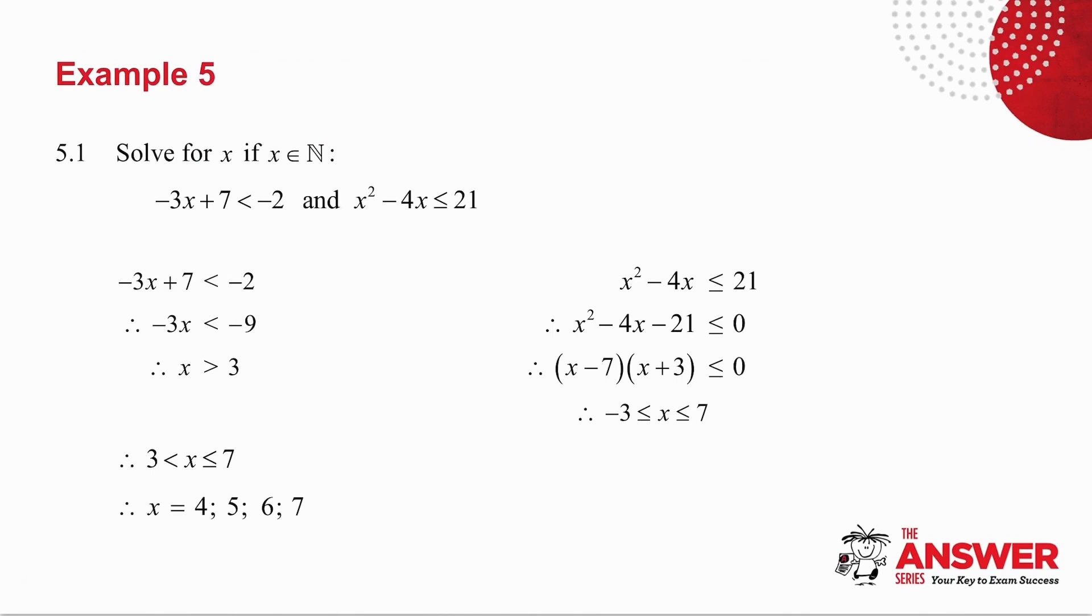The first example has two inequalities. Notice also that they've told you X is an element of N. N are the natural numbers, in other words 1, 2, 3, 4, etc. So let me take the first inequality and I solve for X. Remember when I divide by minus 3 that inequality sign changes.